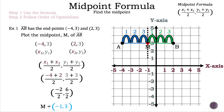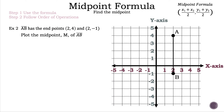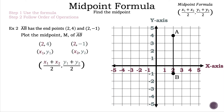Let's take a look at example 2. Segment AB has the endpoints 2, 4 and 2, negative 1. Plot the midpoint M of segment AB. Segment AB has already been plotted on the graph. We write down the two coordinate points — 2, 4 and 2, negative 1 — and label the first point 2, 4 as X1, Y1 and the second point 2, negative 1 as X2, Y2. We can flip-flop the labeling and get the same answer, but we'll continue this way. Midpoint formula: X1 plus X2 divided by 2 and Y1 plus Y2 divided by 2.